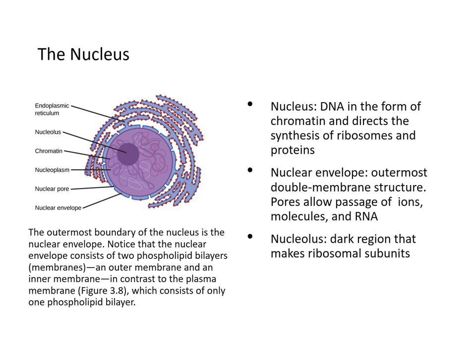Starting with the nucleus: it has DNA inside in the form of chromatin and directs the synthesis of ribosomes and proteins. Ribosomes are synthesized in the nucleolus — the dark region that makes ribosome subunits. The nuclear envelope, or nuclear membrane, has nuclear pores and is the outermost double-membrane structure. The nuclear pores allow passage of ions, molecules, and RNA — which makes sense, since RNA must be transcribed and transported out of the nucleus.